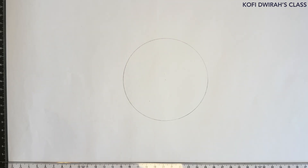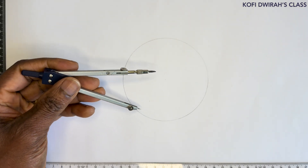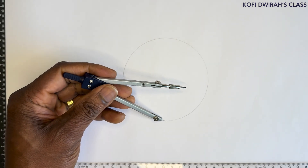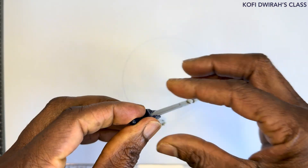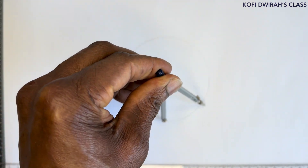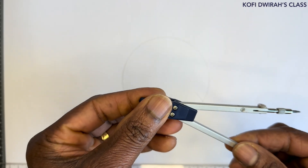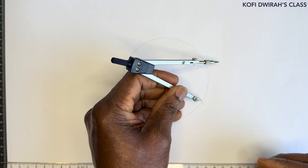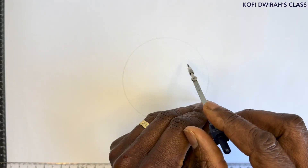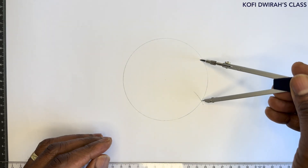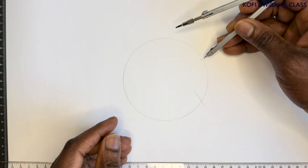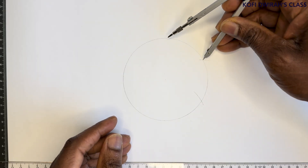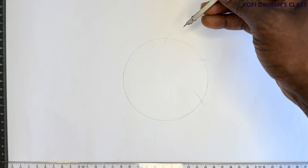After drawing the circle, with the same radius, choose any point on the arc and draw an arc. At that point, draw another arc. Use the same radius to continue marking around the circle.